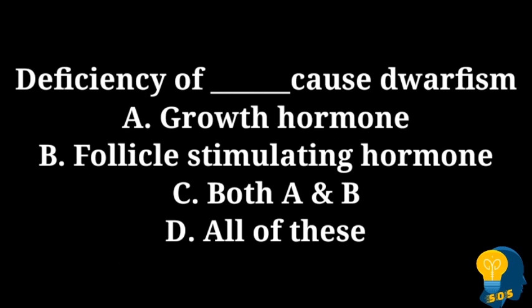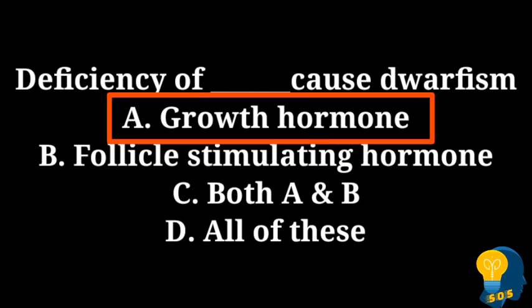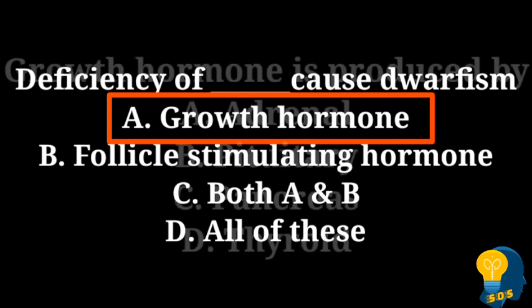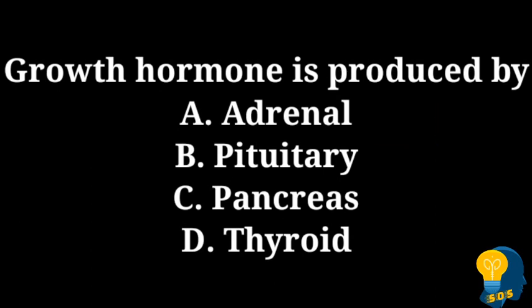The options are option A growth hormone, option B follicle stimulating hormone, option C both A and B, option D none of the above. The correct answer is option A, growth hormone, because growth hormone is responsible for dwarfism and gigantism. If a person has to grow tall or be a dwarf, that will be decided by the growth hormone. The next question is: growth hormone is produced by?